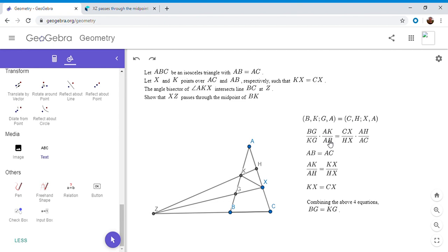You could actually cancel those two fractions. You'd be left with just BG over KG equals one, so BG would equal KG. Therefore, G is the midpoint of BK, so XZ passes through the midpoint of BK.